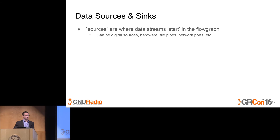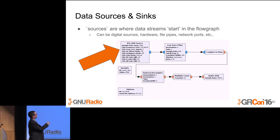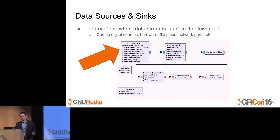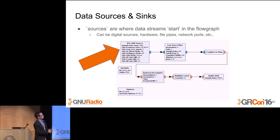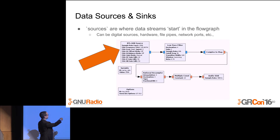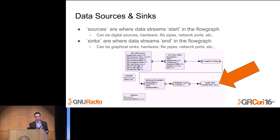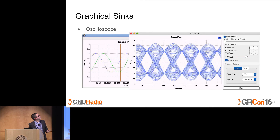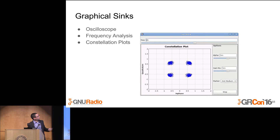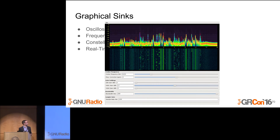This all operates on the concept of data sources and sinks. Sources are where data starts in your flow graph — going back to the same flow graph, this block here is sourcing data through the flow graph. Sinks are where it ends. Sources can be anything: digital sources like a sine wave generator entirely in software, a piece of hardware like an RTL-SDR connected to a laptop, file ports, or network ports — and it's the same way with sinks.